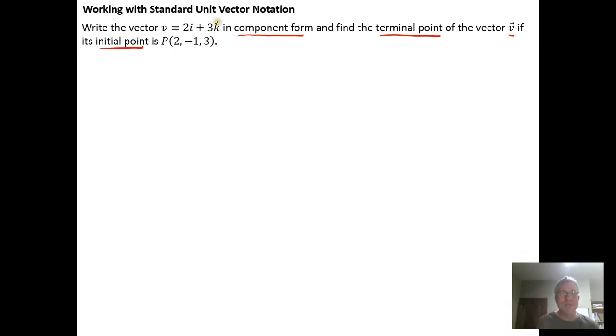So remember the standard unit vectors are i, j, and k. So here I have 2i, so the vector v is going to be equal to 2i which is the vector (1, 0, 0) plus 3 times k, and k is the vector (0, 0, 1). So when we put these together we get the vector (2, 0, 3).